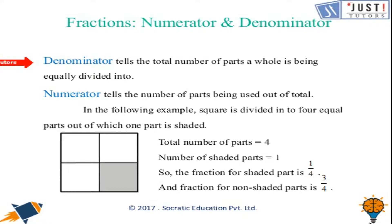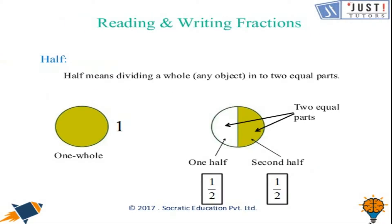In this example, a square is divided into four equal parts, out of which one part is shaded. The shaded part that is used is written at the top and the total number of parts is written at the bottom — that is four. The fraction of the non-shaded part is three quarters.